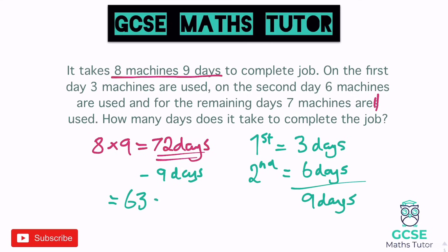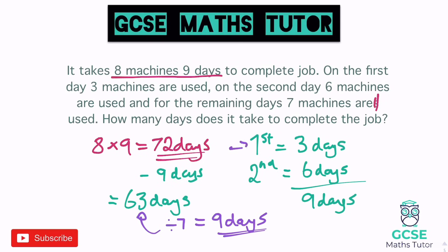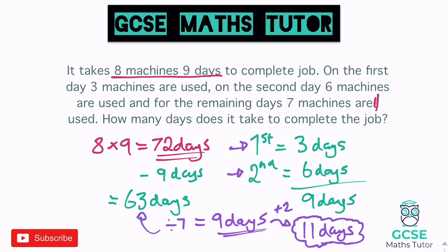We have 63 days of work left, and for the remaining days seven machines are used — seven times faster than one machine — so 63 divided by seven leaves us with nine days. But we haven't finished: we also had day one and day two at the start, so add those two extra days, giving us 11 days total to complete the job.